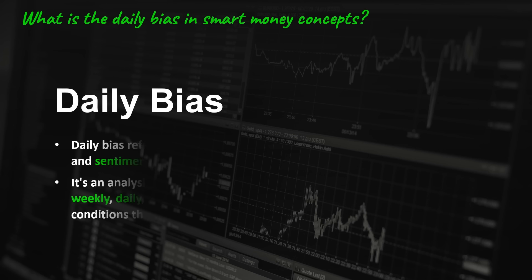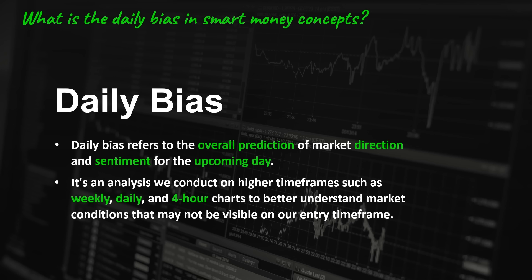What is the daily bias in smart money concepts? As the name suggests, daily bias refers to the overall prediction of market direction and sentiment for the upcoming day. It's an analysis we conduct on higher time frames such as weekly, daily, and four-hour charts to better understand market conditions that may not be visible on our entry time frame. Most daily bias strategies are overly complicated without clear guidance. That's why in this video, we aim to propose an easy step-by-step applicable approach. But first, why do we even need to determine the daily bias, and what is the psychology behind it?